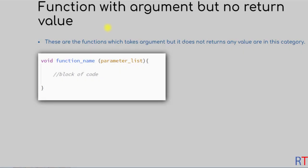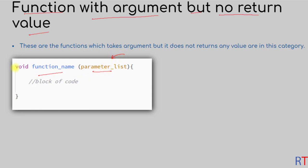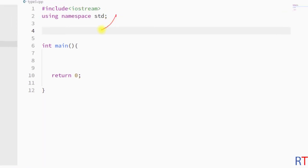In this video we're going to talk about the type of user-defined function with argument but no return value. These are the type of functions which take an argument but do not return any value. We use the parameter list to receive the passed argument, but we use the void keyword to indicate that this method will not return any value.